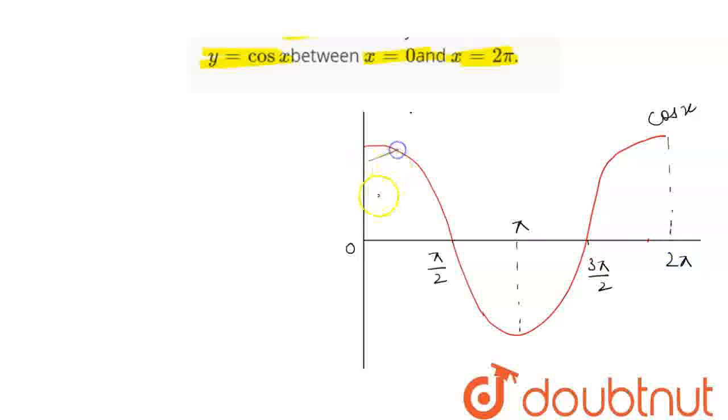Now, we have to find the area of region from 0 to 2π which means this plus this region and plus this region.